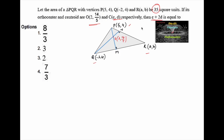Since the orthocenter is given, we know that the orthocenter is the point of concurrence of the altitudes. So we can say PM is perpendicular to QR, and QN is perpendicular to PR. Let us find the slope of PO.